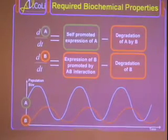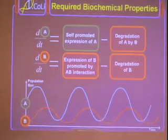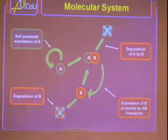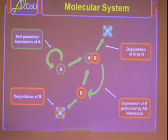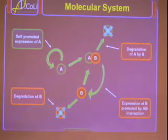So we've got to take these biochemical properties and convert them into a diagrammatic version. So here we have self-promoted expression of A, degradation of A by B. This interaction produces more B, and then finally B will degrade. So this should show a Lotka-Volterra-like oscillation.